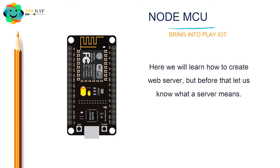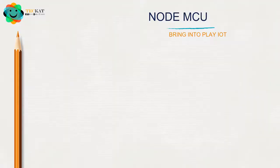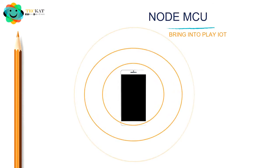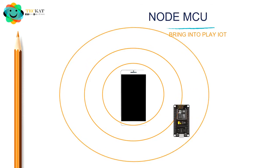Let us first understand what a server actually means. Take a smartphone and switch on its hotspot - it has a range. When we connect the NodeMCU's Wi-Fi to the smartphone's hotspot, a connection is established. The NodeMCU is now in the range of the server created by the smartphone. So the smartphone is the server and the NodeMCU is the client connected to it.